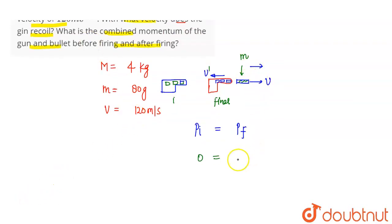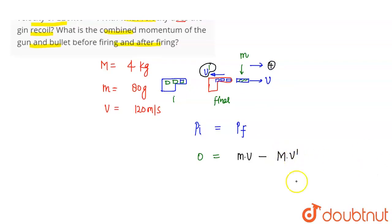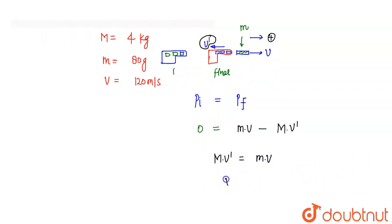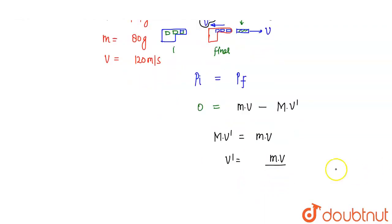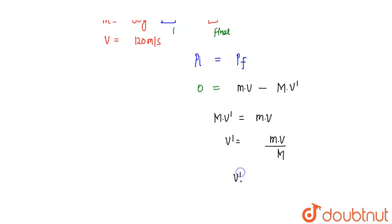Bullet ki speed humein given hai — m into v. Speed se bullet yahan gun se nikali. Ab dekho required speed yahan negative direction mein v-dash ki, because gun hamara peeche ki taraf jayega. Is direction ko aapne positive maana hai, toh capital M into v-dash. Yahi v-dash ki value find out karni thi.